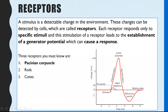A bit more about receptors in general: we've already said they can detect changes in the environment, but each receptor can only detect and cause a response to a specific stimulus. In the AQA specification there are three key receptors you need to know about: the Pacinian corpuscle, which we're going through today, and two photoreceptors in the retina — the rods and cones — and that video is coming out later this week.